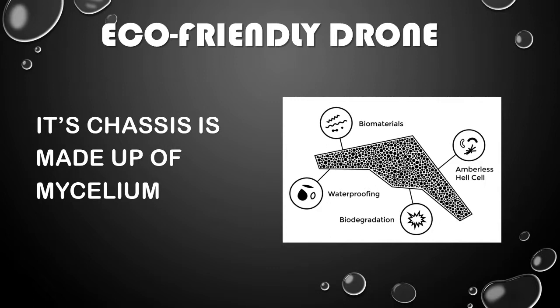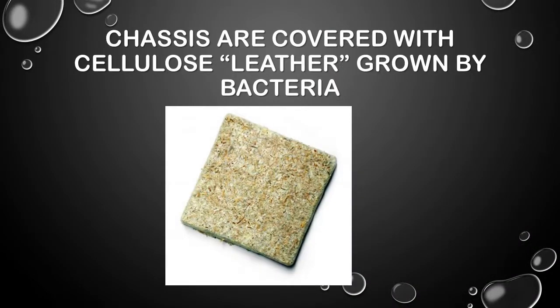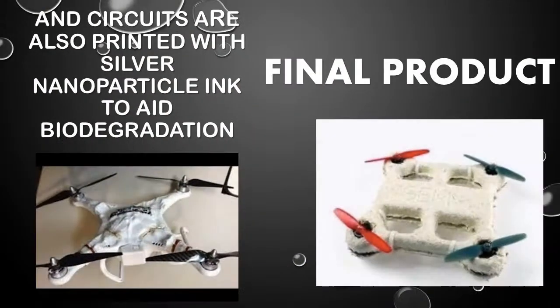Eco-Friendly Drone: a team at NASA's Ames Research Development Center developed a biodegradable drone made mainly of mushrooms that has completed its first flight. The drone's chassis was made of mycelium, a fungal material that can be grown into a specific shape. This mycelium was given a covering of cellulose leather sheets grown by bacteria cloned from insect saliva. Even its circuits were printed with silver nanoparticle ink to aid biodegradation.